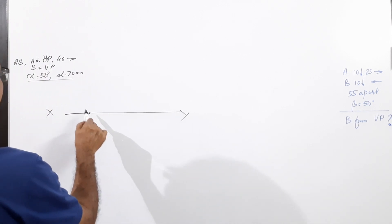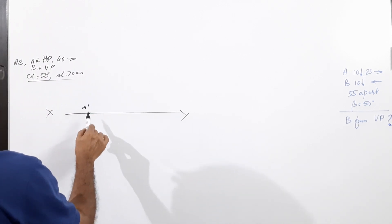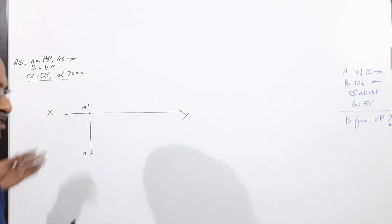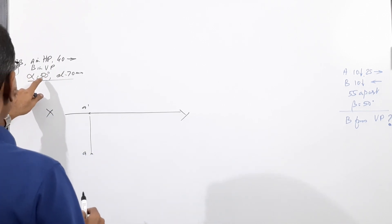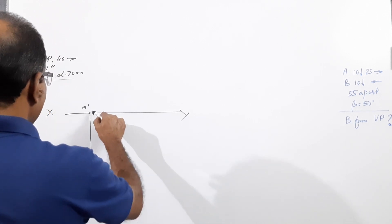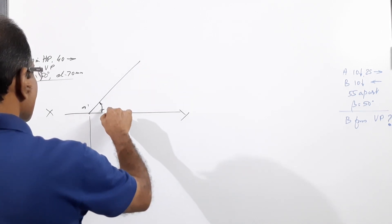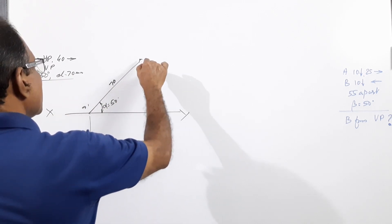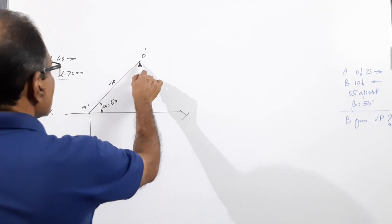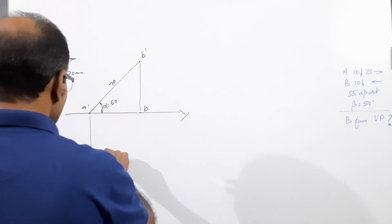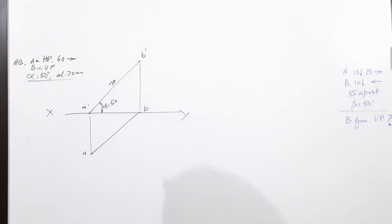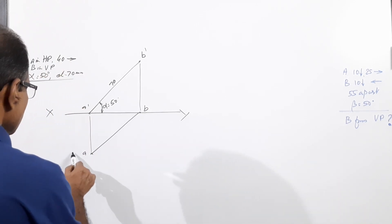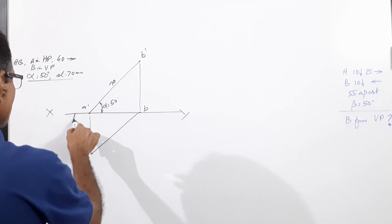Draw the XY line. A-dash is on XY, 40mm below locate A. Alpha is 50 degrees, so at A-dash draw a 50-degree line. On this line measure 70mm and locate B-dash. Drop it down to the XY line — A-B is the plan. This distance is 40mm.